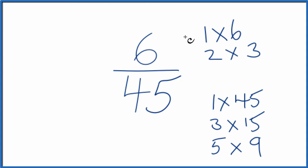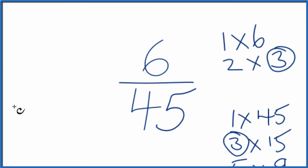I'm looking for the greatest common factor here. So it looks like 3 and 3, that's the greatest factor that goes into 6 and 45 evenly. Let's move these over here.